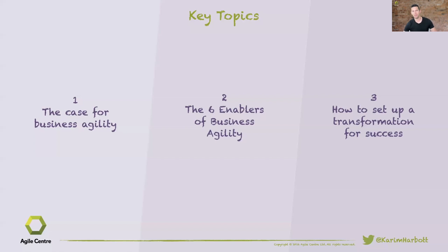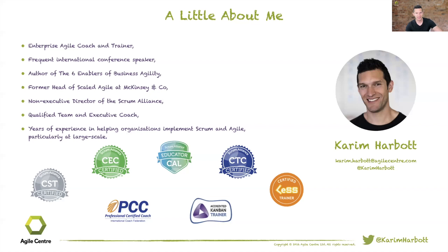At a high level, I want to talk about the case for business agility — hopefully with a new spin. Then I'll cover the six enablers: what they are, why I chose those six, and where things you think are missing might go. I'll also share some hints and tips for a successful transformation and a tool I created to help with that.